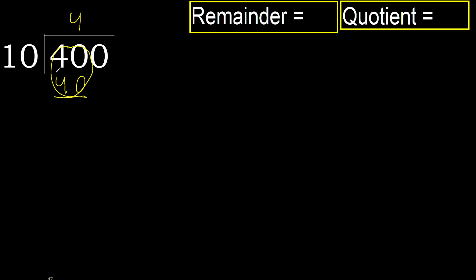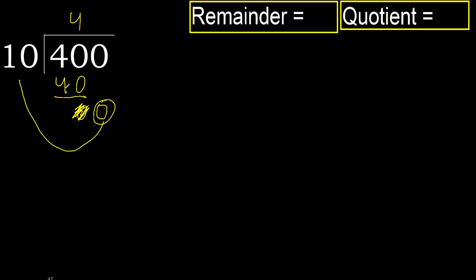Subtract: 40 minus 40 is 0. Next, bring down 0. 0 is less, therefore next.